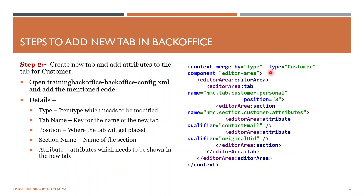In the backoffice.xml code, set the type as 'Customer' — this is the item type you want to edit in the back office, meaning you want to add a new tab to the Customer screen. You can also write 'Product' or any other item type you want to modify. Next is the tab name — provide a key for localization; I have set it as 'hmc.tab.customer.personal'. The position is a number indicating where the tab appears — position 2 means second, position 3 means third.